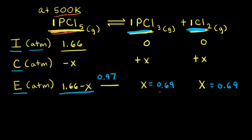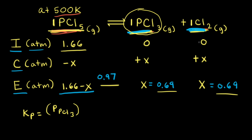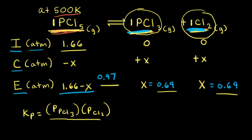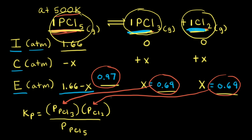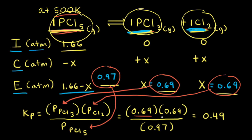Now that we have our equilibrium partial pressures for all three gases, we can calculate the value for the equilibrium constant Kp at 500 Kelvin. We write Kp equals the partial pressure of PCl3 times the partial pressure of Cl2, all divided by the partial pressure of PCl5. Plugging in: PCl3 is 0.69, Cl2 is 0.69, and PCl5 is 0.97. Solving, we get Kp equal to 0.49 at 500 Kelvin.